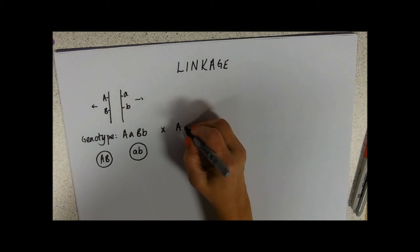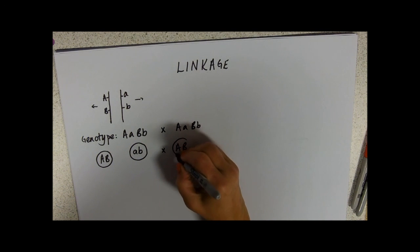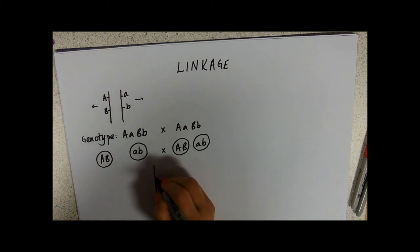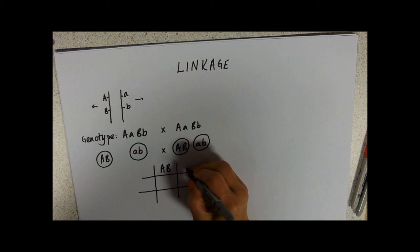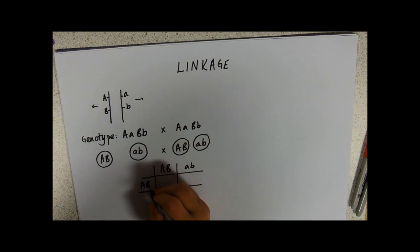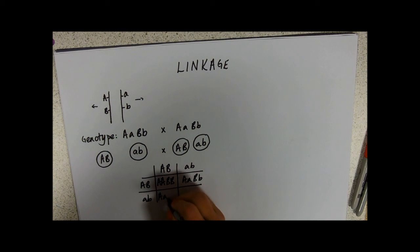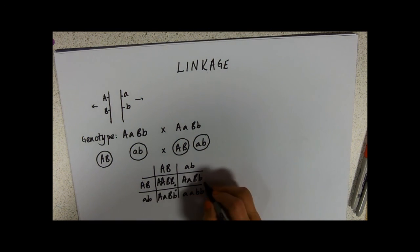We get the gamete type that has both of the dominant alleles in, and we get the gamete type that has the recessive alleles in. Now if we're crossing two individuals, each one is now only producing two gamete types. When we put it into our Punnett square, we're not going to get that 9:3:3:1 ratio. We've only got four Punnett boxes for a start.